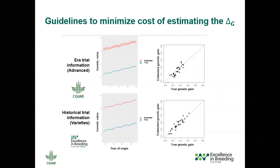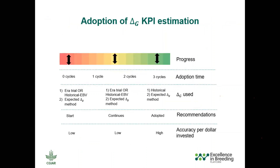The guideline to minimize the cost of estimating the rate of response to selection or genetic gain is to use the trial information that your breeding program actually produces normally, instead of running explicit trials like error trials to estimate this metric. This depends on whether you have a good connectivity strategy — you can only use the trial data if you can connect the data. The estimate using error trials or historical trials can be equally as good if the connectivity is good. But if connectivity is not good or doesn't exist, the estimates of these two methods will be very, very different.